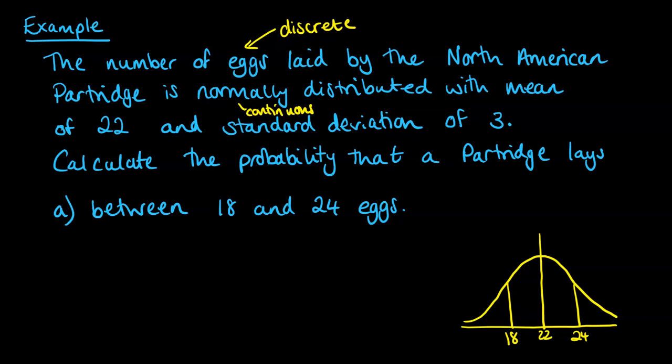It could be 18.2, it could be 17.7. They would all have rounded to 18. So what we have to do is extend the limits that we're talking about here at the top and the bottom, so that we include any number that would round to what we want. Now, if we're going between 18 and 24 eggs, that's implied that it's inclusive.